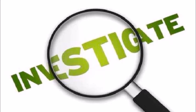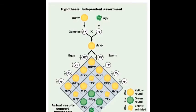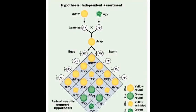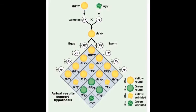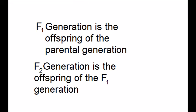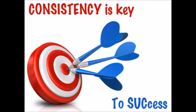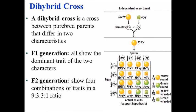Mendel also investigated the inheritance of multiple traits and was able to determine whether inheriting one trait affected the inheritance of another. For example, does a pea being yellow make it more likely to be smooth as well? Mendel crossed a true breeding line of smooth and yellow plants with a line of wrinkled and green plants. Seed color is represented by big Y for yellow and little y for green, showing that yellow is dominant and green is recessive. This first generation is called the parental or P generation. When he crossed the two lines to create the F1 generation, all progeny were smooth and yellow, consistent with his previous results. He then self-fertilized the F1 plants to create the F2 generation. Since the F1 plants were heterozygous for both genes, this is called a dihybrid cross.